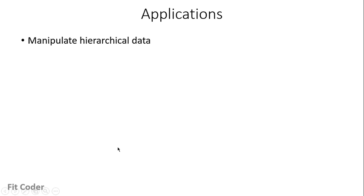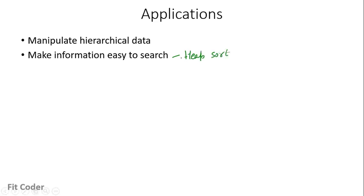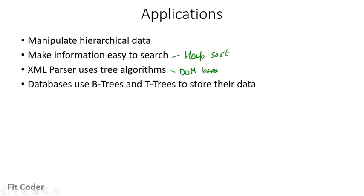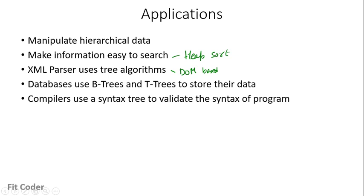Now, where are trees used? Because trees maintain a hierarchy, they are used to manipulate hierarchical data. Different algorithms work on trees — for example, Heap Sort uses trees for sorting and easy searching. Many XML parsers use tree algorithms, such as DOM-based parsers that create a Document Object Model based on a tree. B-trees and T-trees are used by databases to store data and indexes. Compilers also use a syntax tree to validate the syntax of programs. These are some important applications of the tree data structure, making it a crucial topic for interviews and competitive programming.